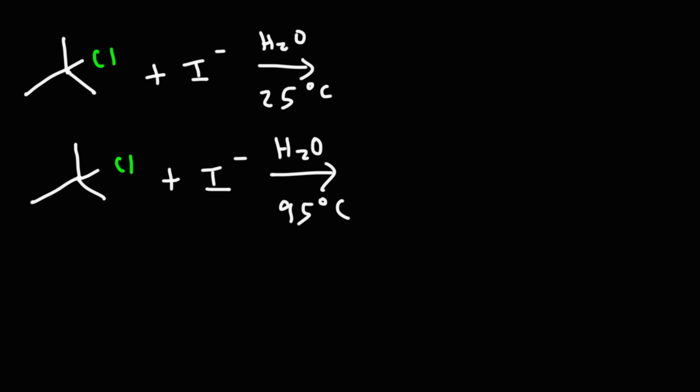Consider the reaction of tert-butyl chloride reacting with iodide dissolved in water, but at different temperatures. In the top example, we're reacting it at a low temperature of 25 degrees Celsius, and in the bottom example at a higher temperature of 95 degrees Celsius. What's going to be the major product for this reaction and what mechanism will it proceed by?